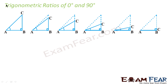Let's derive for 0 degree angle. To get the 0 degree, what we'll do — we'll take this triangle and keep reducing the angle. For example, if you see angle A, we are reducing it, making it to 0. That's to show you how it goes.